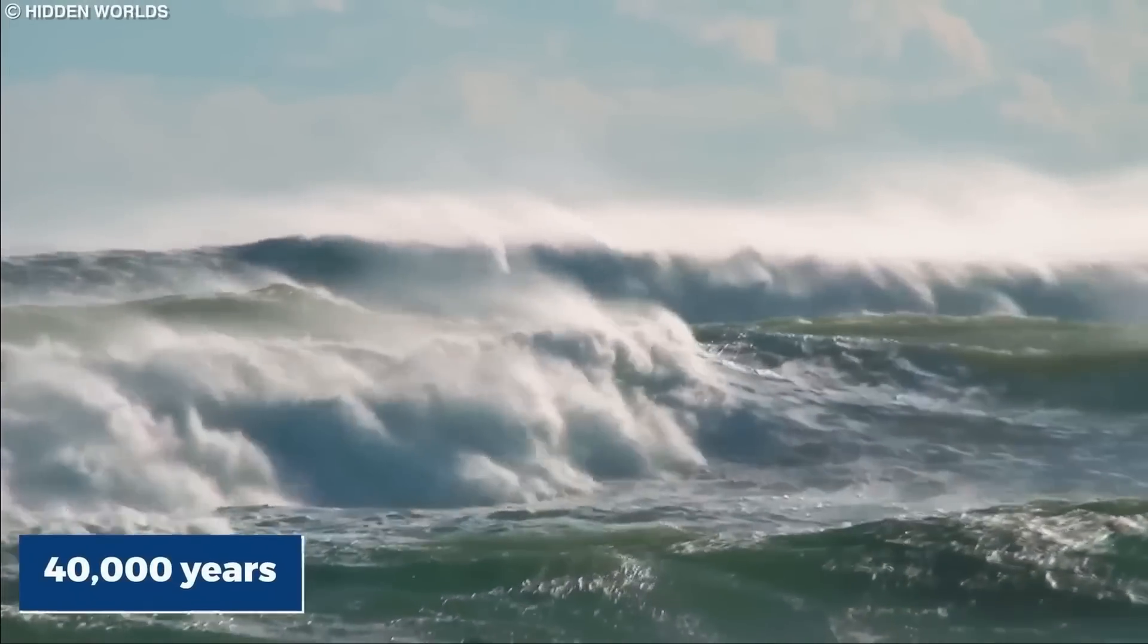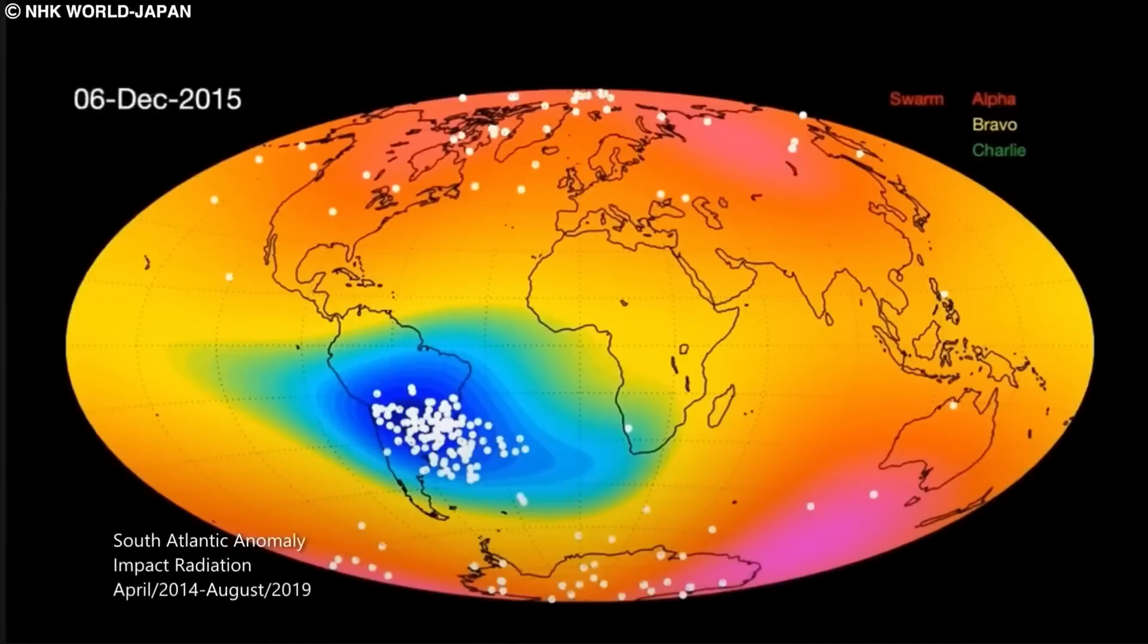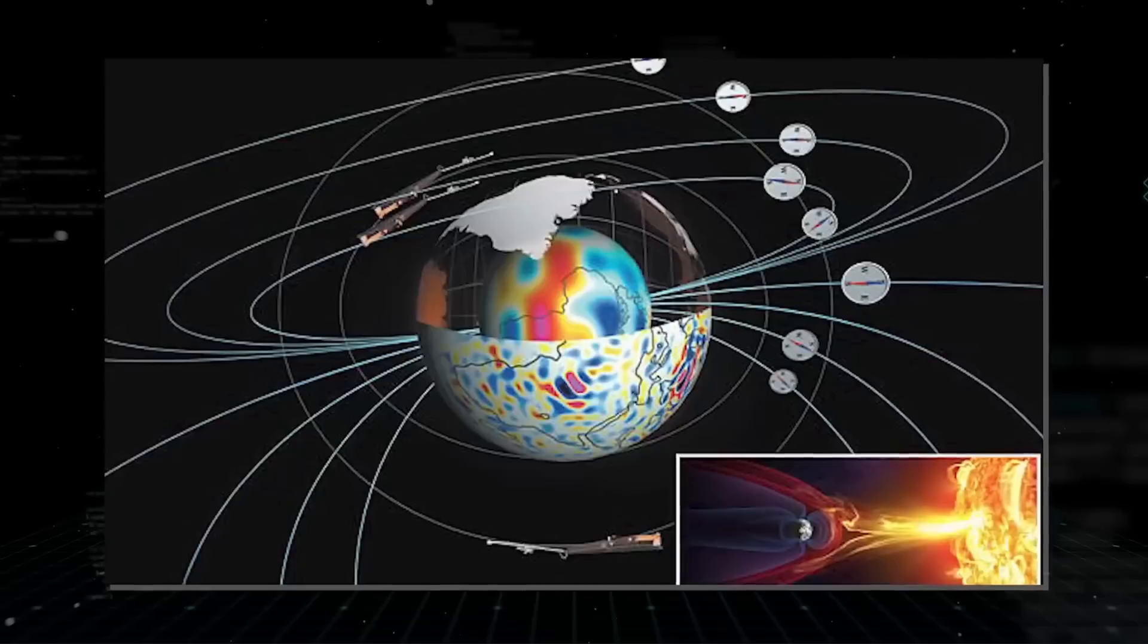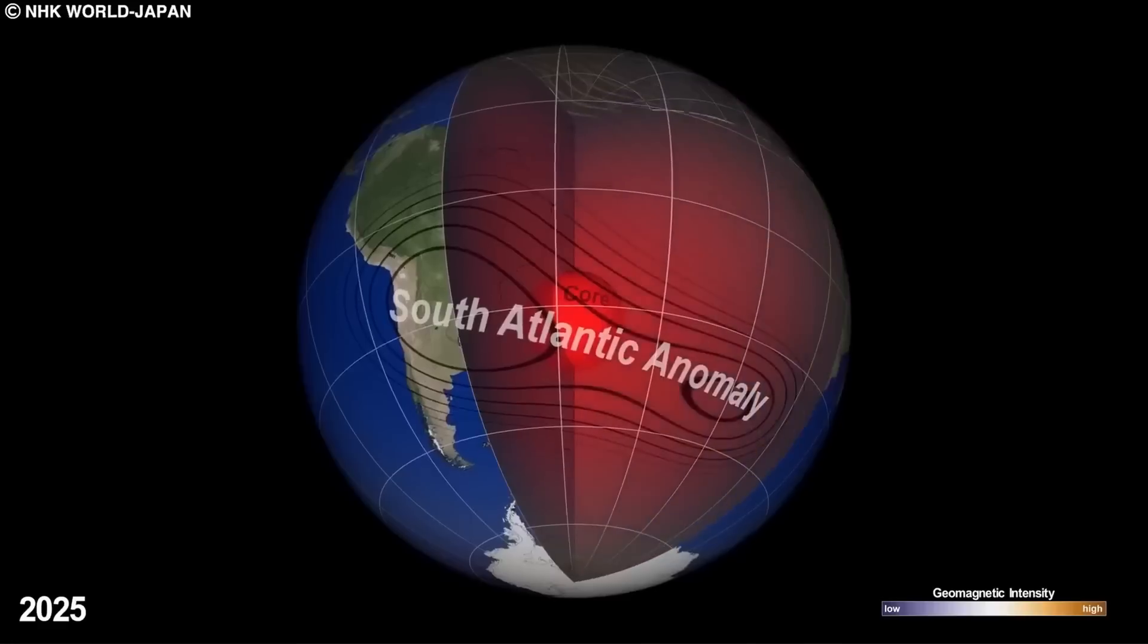The last excursion occurred almost 40,000 years ago, and there are signs that we are on our way to experiencing it again. The Earth's magnetic field has lost 30% of its strength in the last 3,000 years, and it is estimated that it will drop to near zero in a few hundred or thousand years.